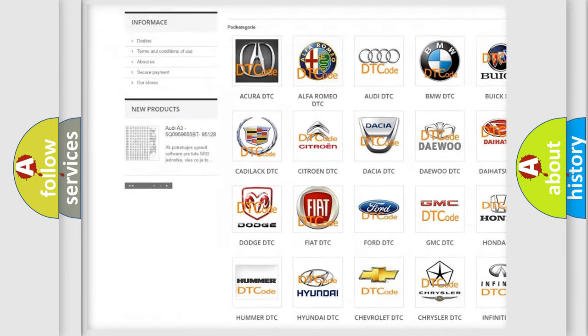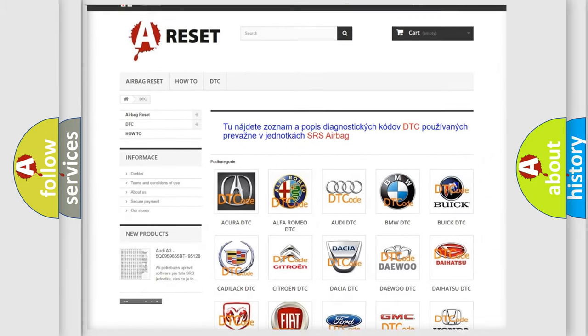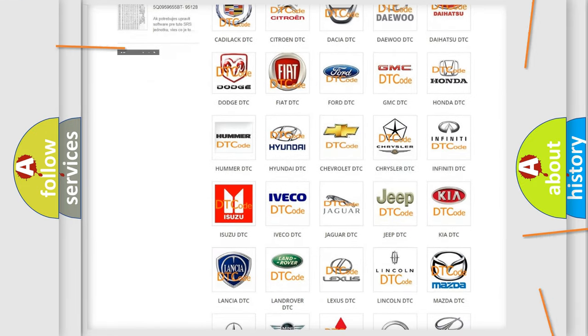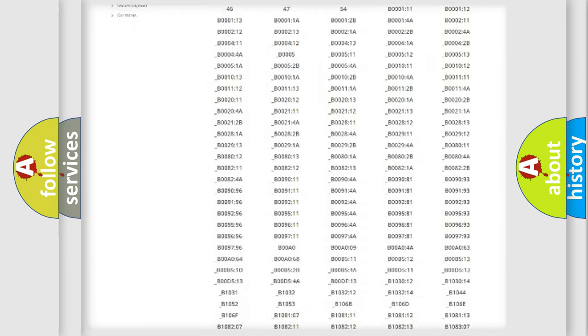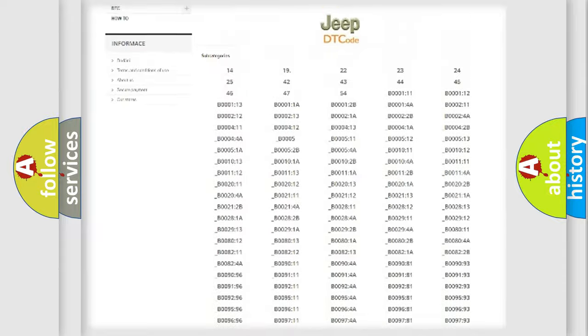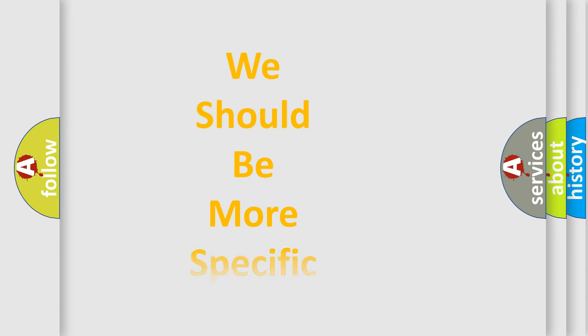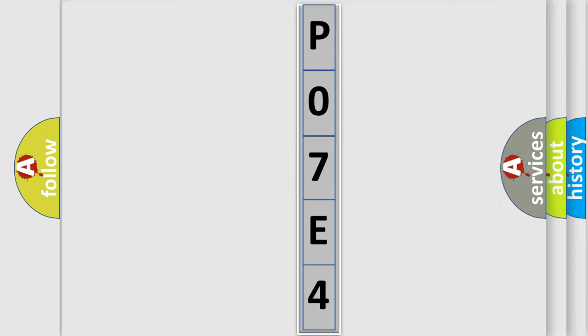Our website airbagreset.sk produces useful videos for you. You do not have to go through the OBD2 protocol anymore to know how to troubleshoot any car breakdown. You will find all the diagnostic codes that can be diagnosed in Jeep vehicles, and many other useful things. The following demonstration will help you look into the world of software for car control units.